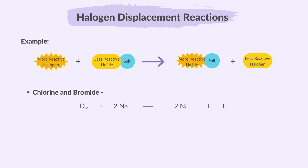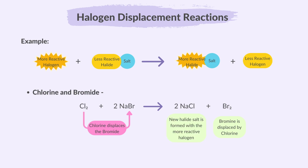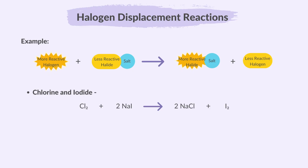Let's look at some examples. In the case of chlorine reacting with a bromide: chlorine is more reactive than bromine, so it displaces bromine from sodium bromide, forming sodium chloride and bromine gas. Since bromine is the less reactive halogen, it gets displaced by chlorine. A new halide salt, sodium chloride, is formed with the more reactive halogen, chlorine.